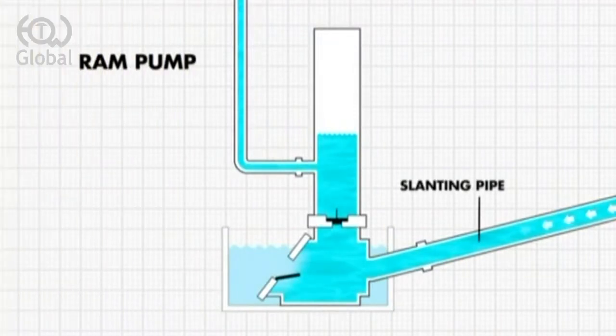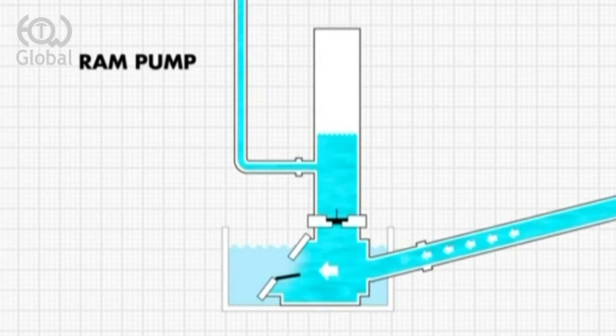From the river stream or spring, the water is delivered to the pump through a slanting pipe. The water is driven into the pump using simple gravity and closes the waste valve, creating a high pressure.